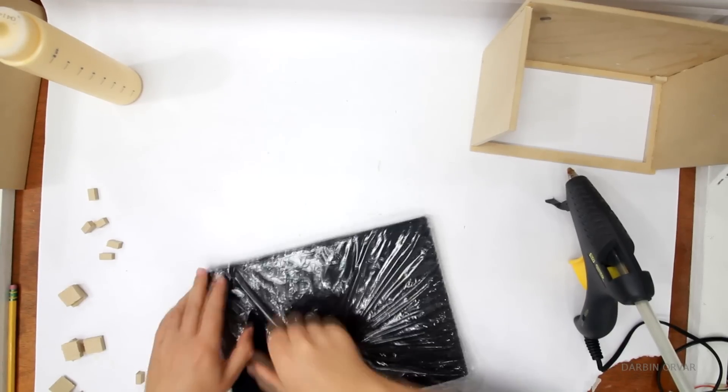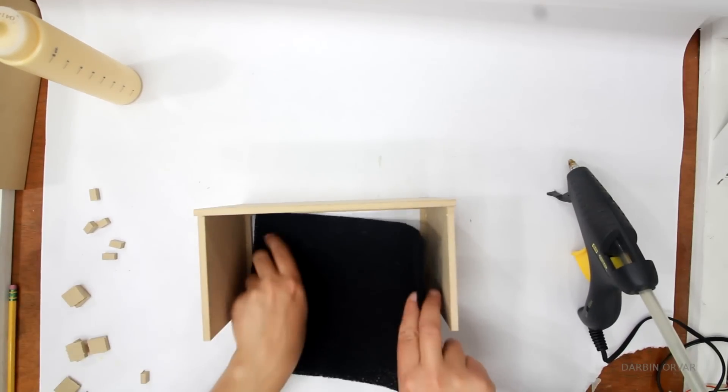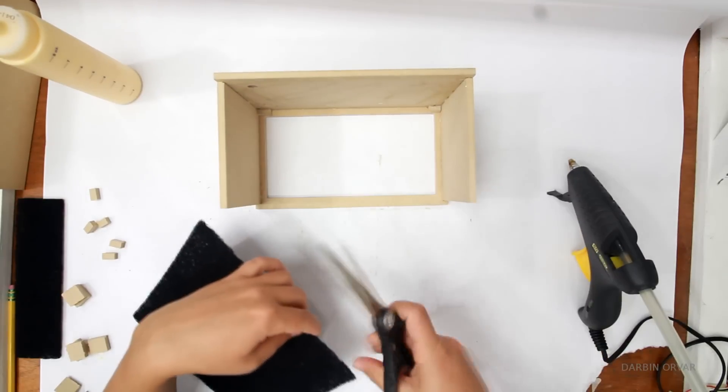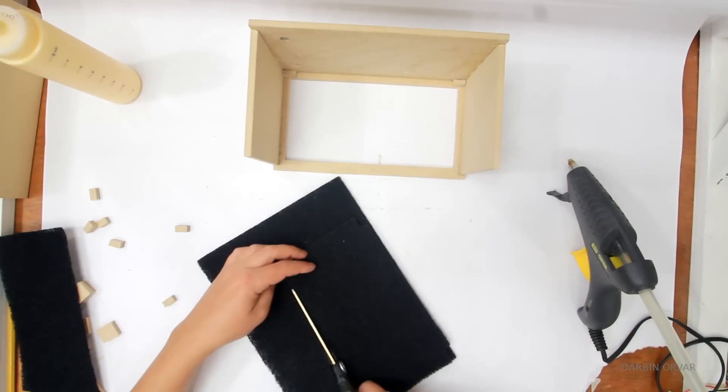Now as a filter, I ordered a charcoal filter meant for a range fan. Just fitting it in there, and I'm notching out the space for the little support pieces in the corners. I'm also doubling up with two pieces of filter.